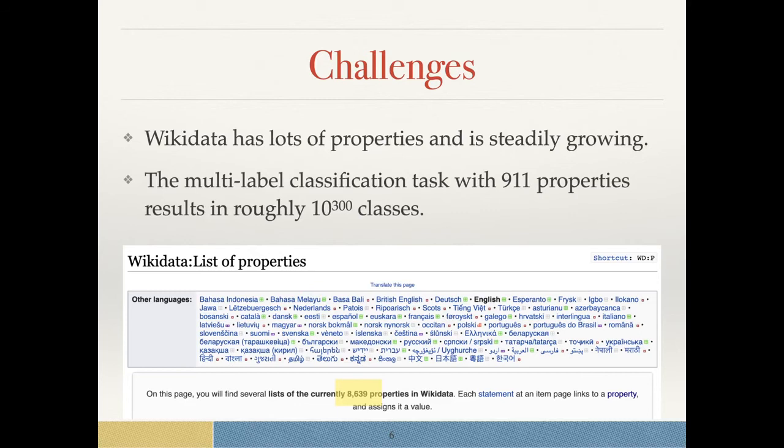The challenges which we face are first that Wikidata has a lot of properties. As of today, we have 8639 properties in Wikidata, from which many are identifier properties linking to other databases. If you remove these and clean up extremely rarely used properties, we are at 911 properties. With 911 properties and a multi-label classification task, we have a result of roughly 10 to the power of 300 classes.